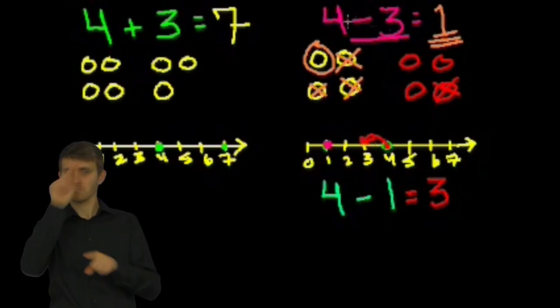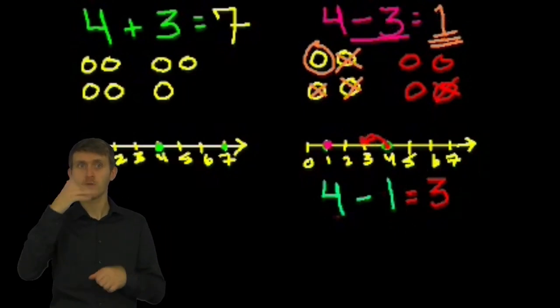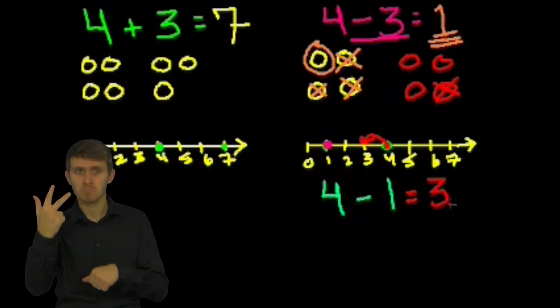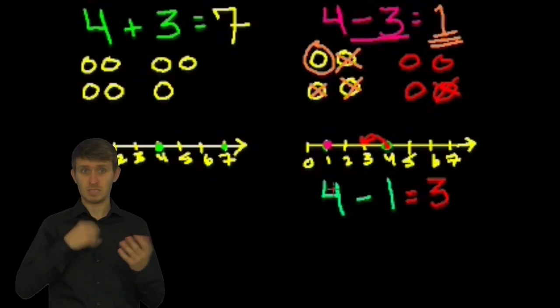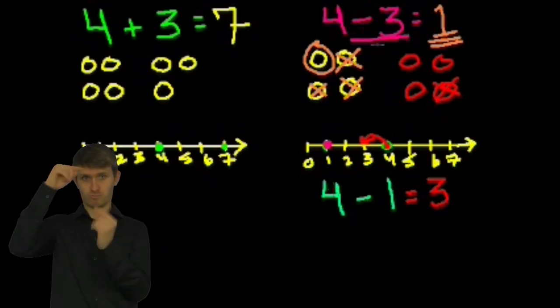But isn't this interesting? 4 minus 3 is equal to 1. And 4 minus 1 is equal to 3. You might say, well, did I pick the numbers just so it worked? Well, it turns out that it's always true.